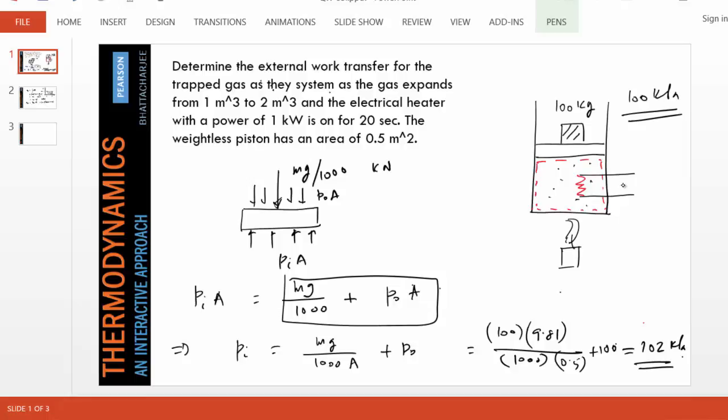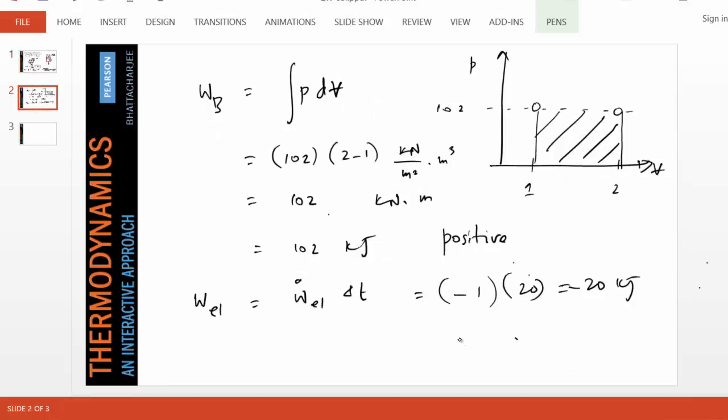If you recall the WINDH convention, work in negative, heat in positive. The electrical work is going in, that's why it is negative. Therefore the net external, the total external work transfer W external in this case is the boundary and electrical work transfer.